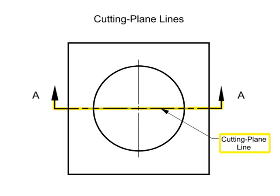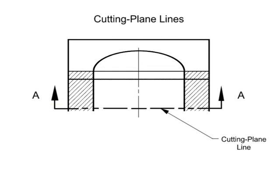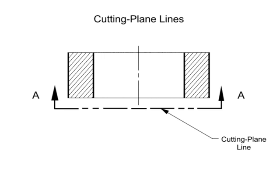Cutting plane lines are used to indicate a plane or planes in which a section is taken. The arrows at the end of the cutting plane line indicate the direction of the view or the direction your eyes look after the cut is taken.